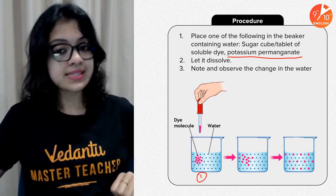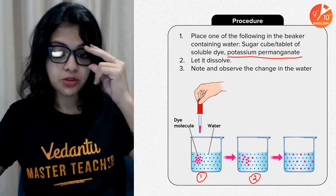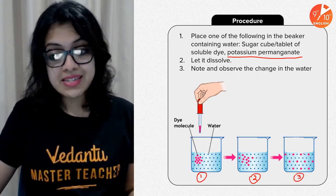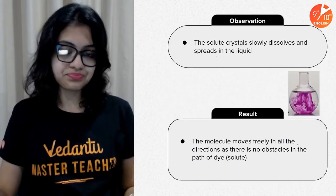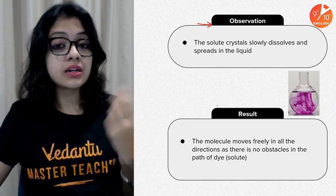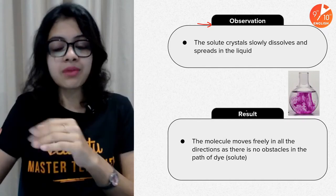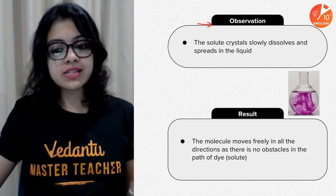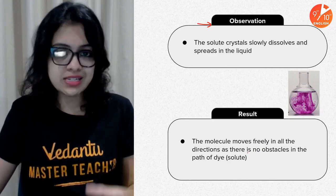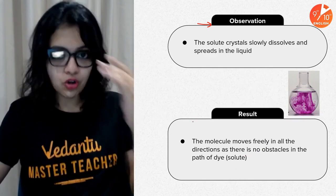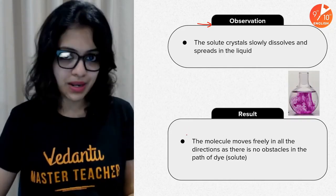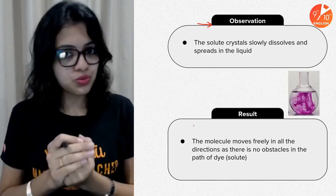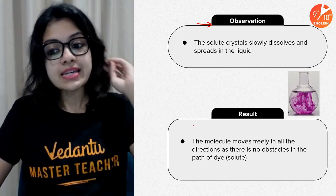Once you have added the potassium permanganate crystals to the water, you can see that the colored crystals slowly dissolve and spread around in the liquid. The result is that molecules move around freely in all directions, as there is no obstacle in the path of the dye — which is potassium permanganate in this experiment. It keeps diffusing until the water becomes evenly purple in color. This demonstrates diffusion.